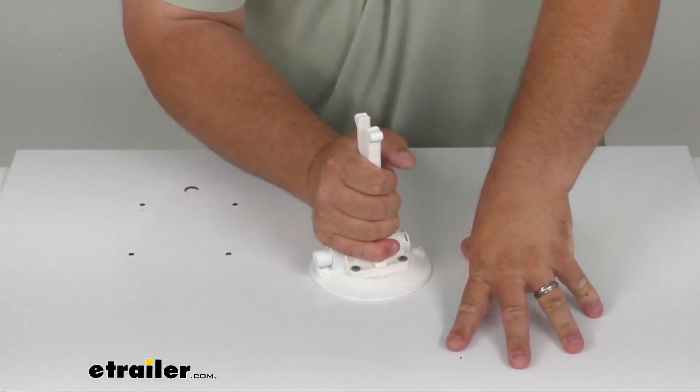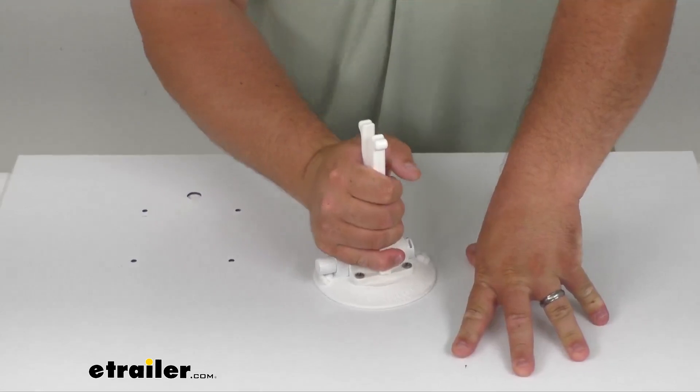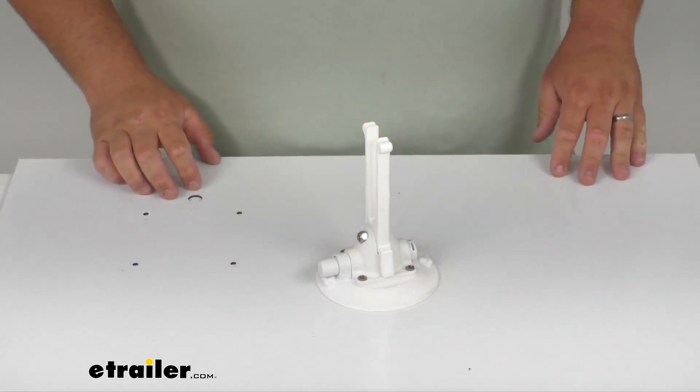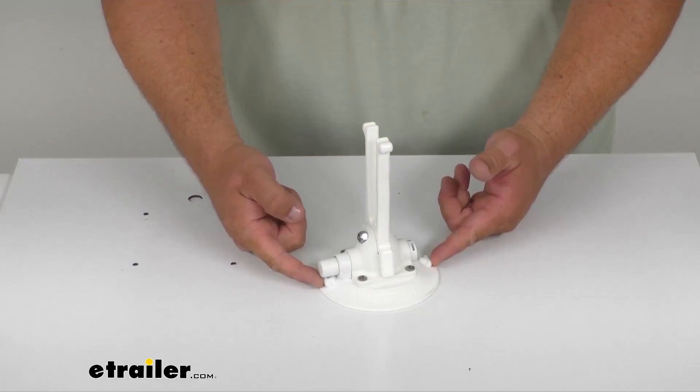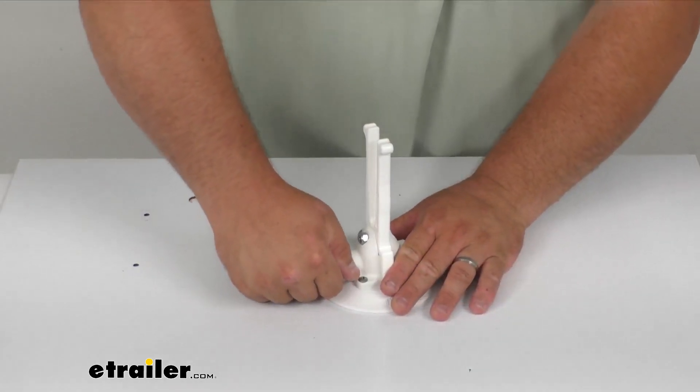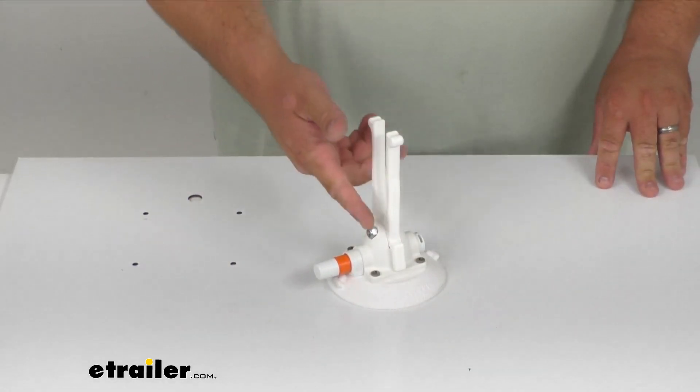And it's actually rated at a whopping 120 pounds of pull force. To release the vacuum, there's two tabs here. You just simply push them in and kind of pull up at the same time and it'll pop right out.